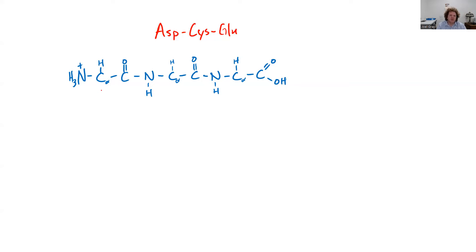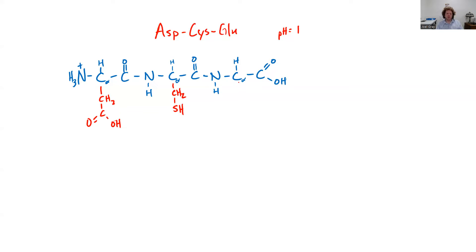With that in mind, my aspartic acid is on my N-terminus. So I'm going to draw CH2, C, and drawing this out at pH of 1 — I've got an oxygen, OH. Cysteine is going to be CH2, and then cysteine has a sulfhydryl group, so it's going to be SH. Glutamic acid is my last amino acid, my C-terminal amino acid. Again, at pH of 1, it is CH2, CH2, and that's where I've got my carboxylic acid functional group.